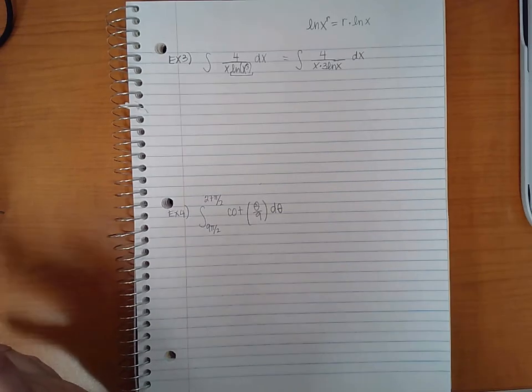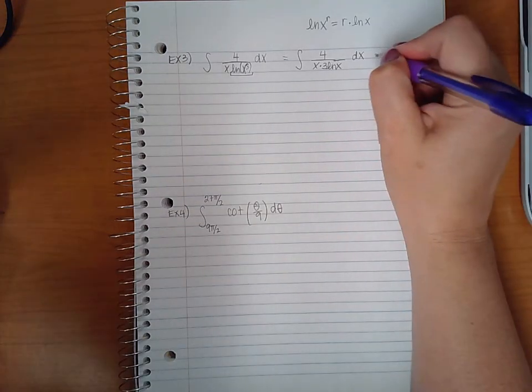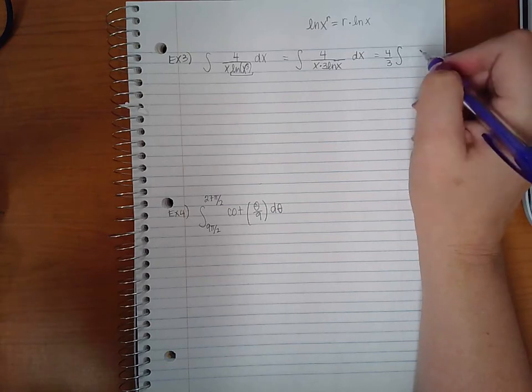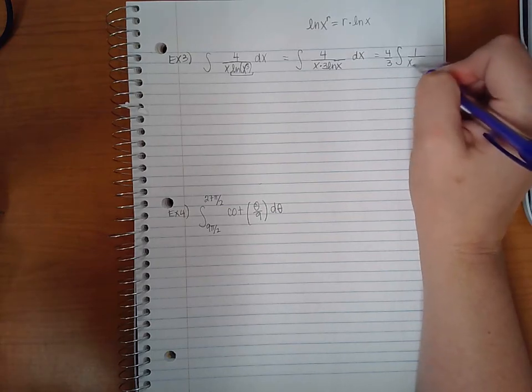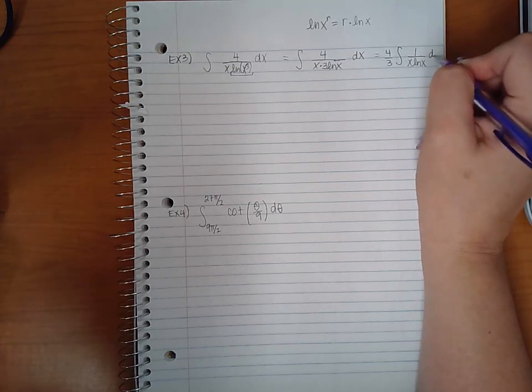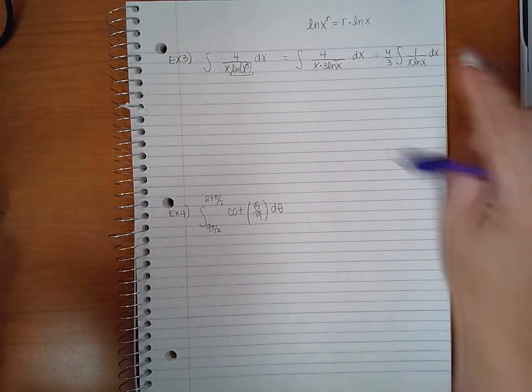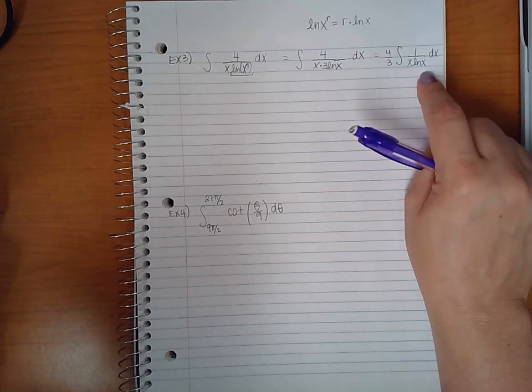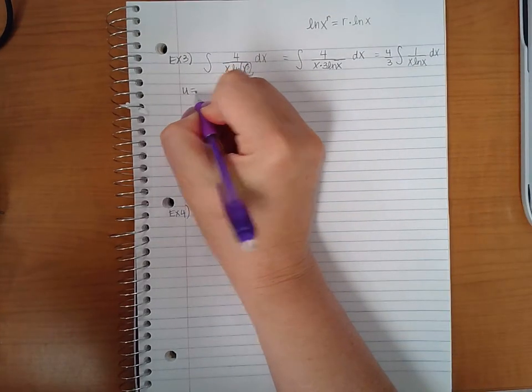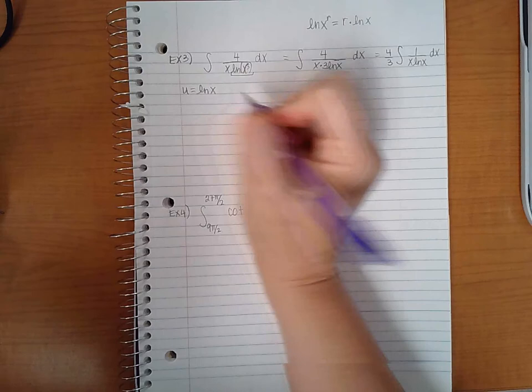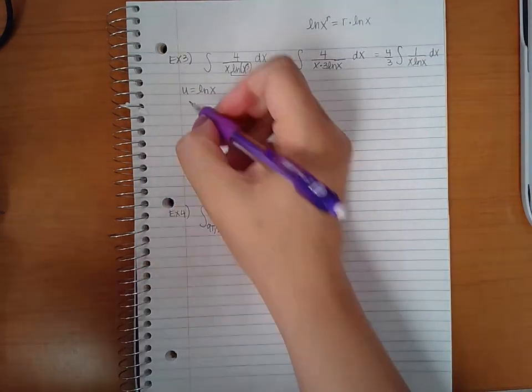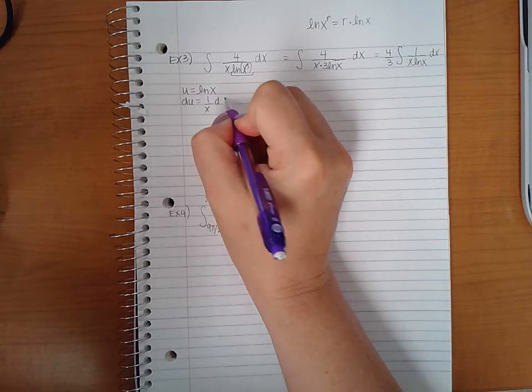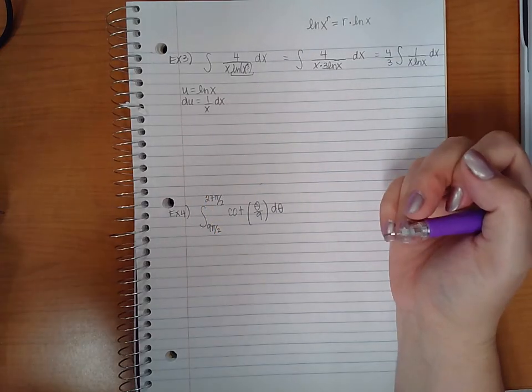If I wanted to take the constant multipliers out of the problem, I could do 4 thirds and then 1 over x ln of x dx. So the more complicated part here would probably be the ln of x, so that's what I'm gonna let u equal.